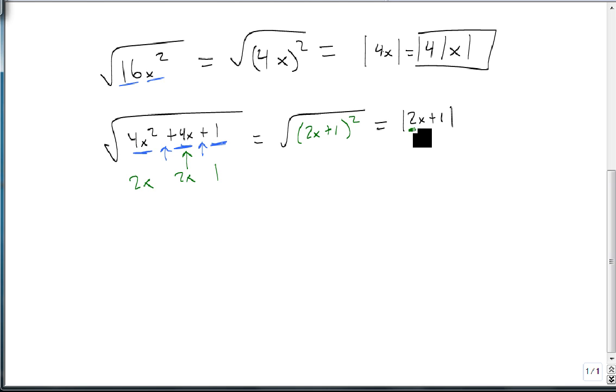Now we can't pull this 2 out because the x is connected by that plus 1. So if it's a factor, the whole thing is a factor, nothing comes out. If they're separate factors, then we can remove a factor.